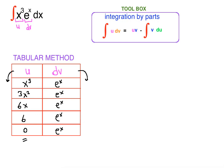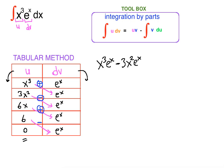After that, we make our diagonal arrows, starting from first row to second, as shown. Our signs alternate starting from positive, negative, positive, negative. Now we multiply along the arrows: x cubed times e to the x is x cubed e to the x — positive. The next sign is negative, so negative 3x squared times e to the x gives negative 3x squared e to the x. Next sign is positive: plus 6x e to the x.